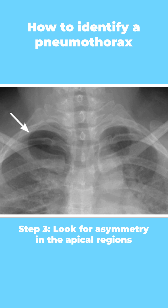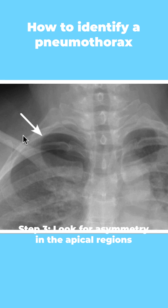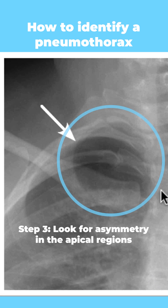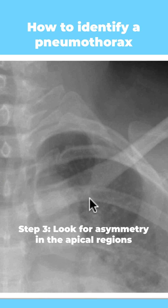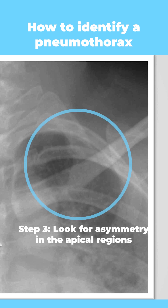Next, we look for asymmetry in the apical regions, knowing that the pneumothorax — or the air within the pleural space — will rise to the highest point. In this case, we can identify that the right apical region is blacker than on the left.